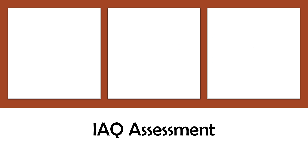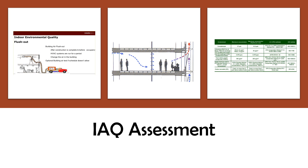You can get a possible two points for completing an indoor air quality assessment. The intent is to ensure the air quality indoors is better so as to improve health, productivity, and well-being. There are two options, which are completed right after construction is done. Option one, which can earn one point, is a flush out. Be sure you know the specifics. Path one is before occupancy.